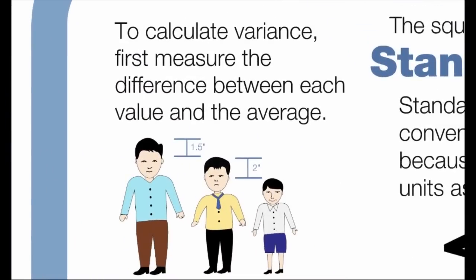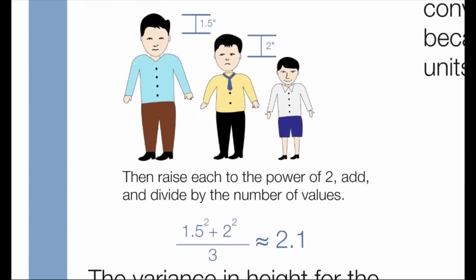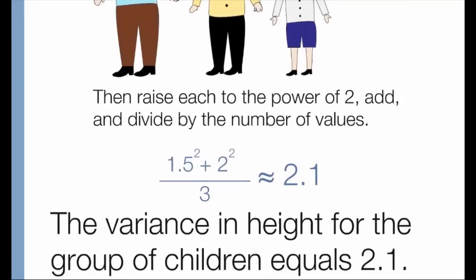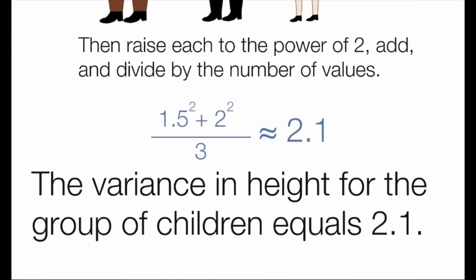To calculate variance, first measure the difference between each value and the average. Then raise each to the power of 2, add, and divide by the number of values. The variance in height for the group of children equals 2.1.